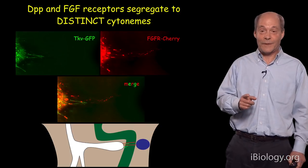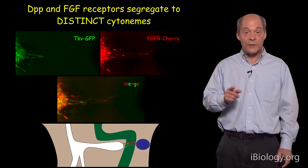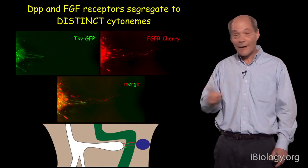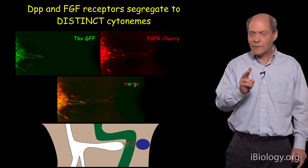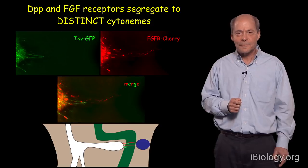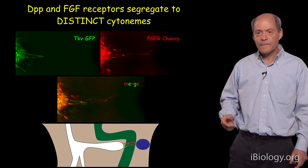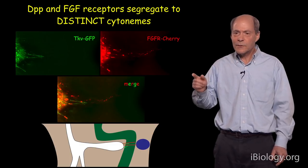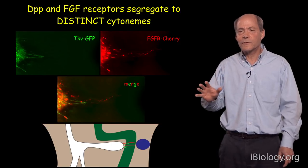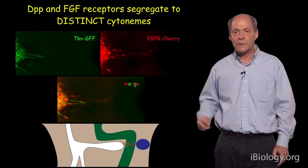The surprise was that cytonymes containing the DPP receptor Thick Vein-GFP do not have the FGF receptor-cherry, and cytonymes with the FGF receptor do not have the Thick Vein receptor. That is, there are two populations of cytonymes: one containing the DPP receptor Thick Veins, and the other containing the FGF receptor. These two populations perhaps have specific functions — one to transport DPP, the other to pick up and transport FGF.